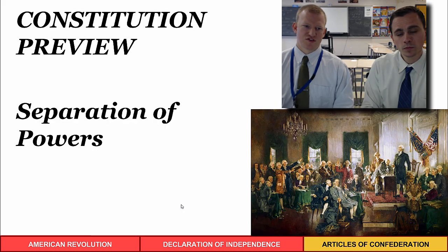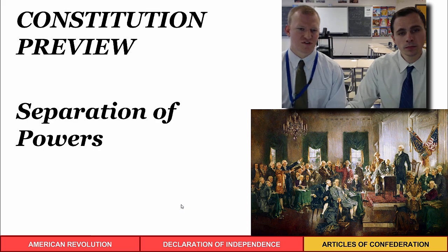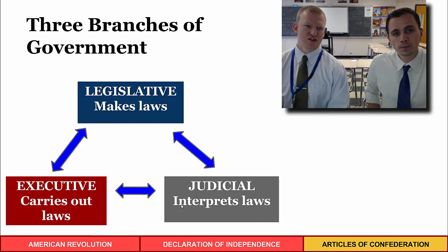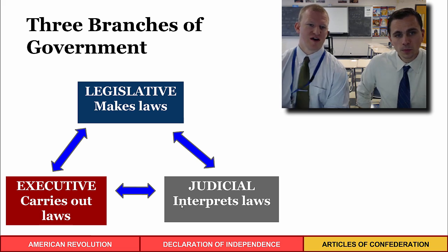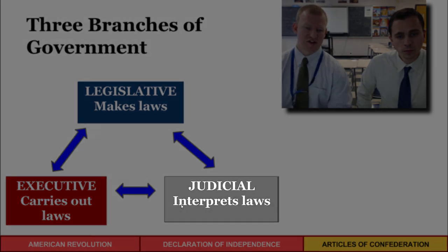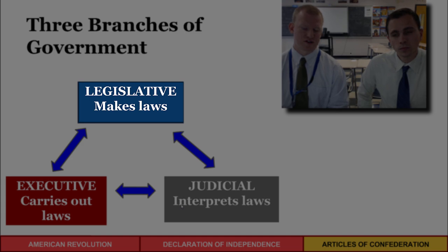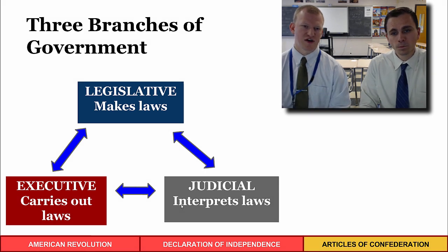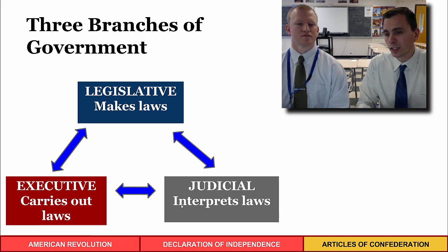The Articles had only one branch — Congress — with no president and no judicial branch. The Constitution resolved this through separation of powers, dividing government into three branches. An executive branch carries out and enforces laws. A judicial branch interprets laws and settles disputes. The legislative branch, which had existed in state governments and under the Articles, makes laws and votes on matters of public importance. This is a glimpse of how the Constitution solved the problems of the Articles of Confederation.